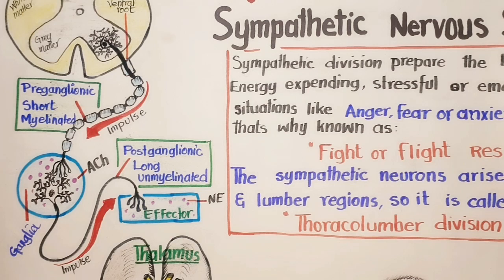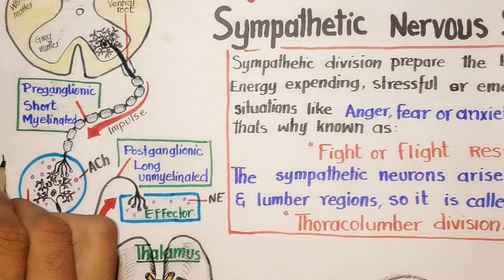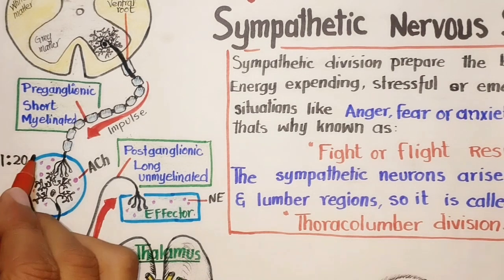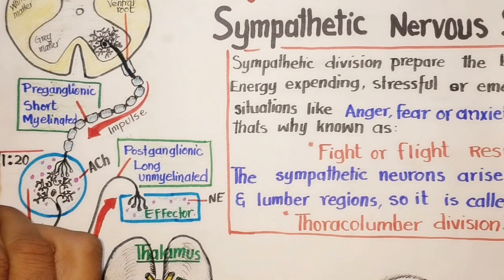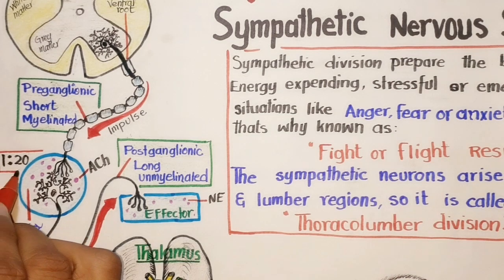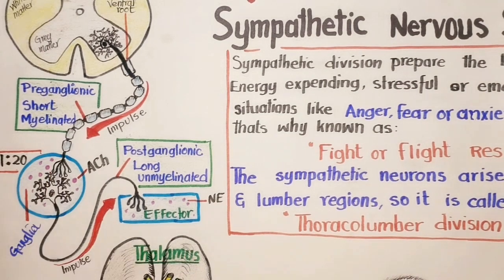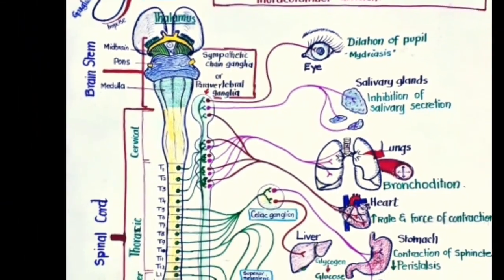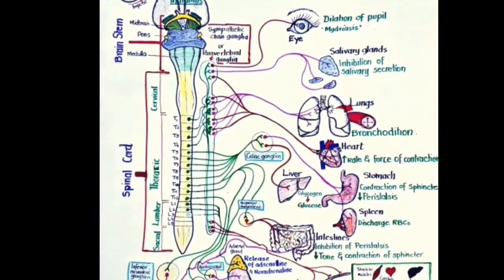In most cases, the preganglionic nerve endings of the sympathetic nervous system are highly branched, allowing one preganglionic neuron to interact with many postganglionic neurons. One fiber stimulates about 20 postganglionic neurons. This arrangement allows the sympathetic division to activate several effector organs at the same time. Thanks for watching, and support us by subscribing to our channel.